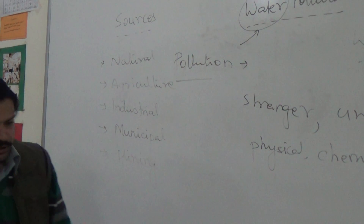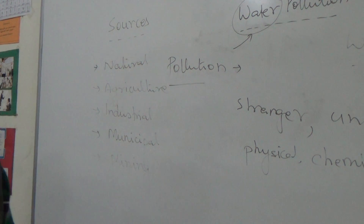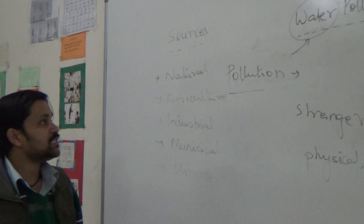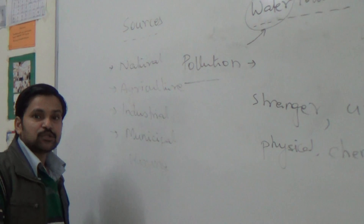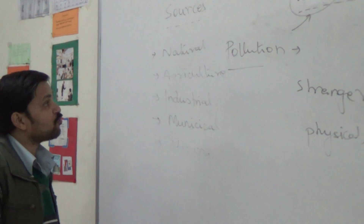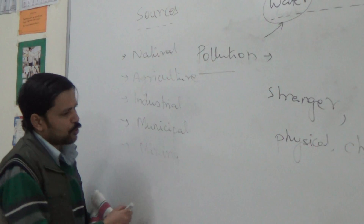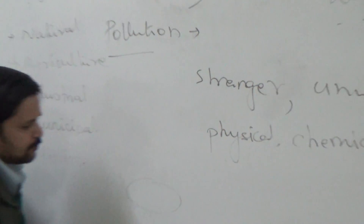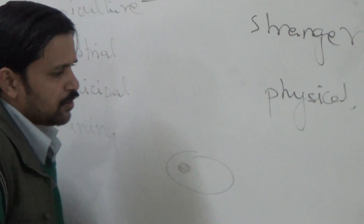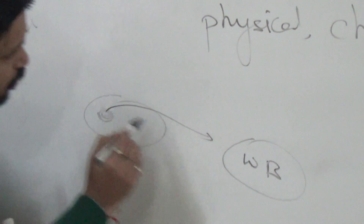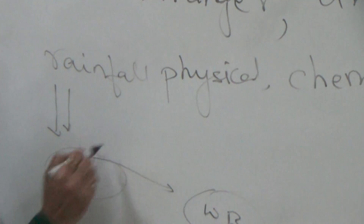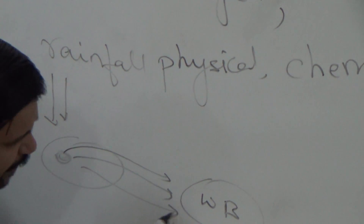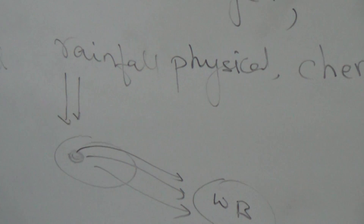Natural source means the degradation of plant and animal bodies, by which toxic material percolates into the soil and mixes with groundwater, causing groundwater pollution. Also, due to surface runoff — suppose this is an open area where some degradation is going on — rainfall causes these materials to flow into nearby water bodies and cause water pollution.